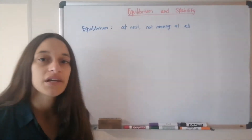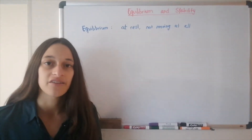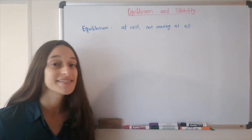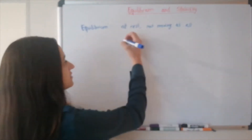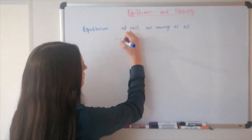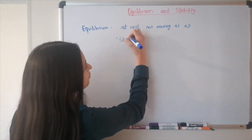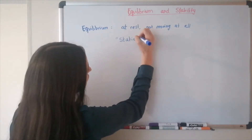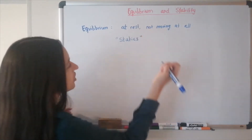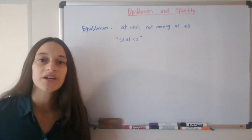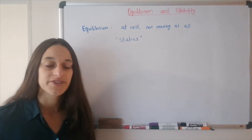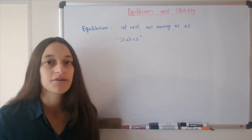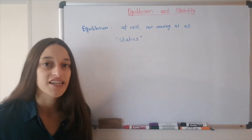The area of physics and engineering that studies equilibrium is called statics — because static means that something is not moving. This is actually a very big area of study and it becomes very complicated with time, but today we're just going to look at the basics of statics.